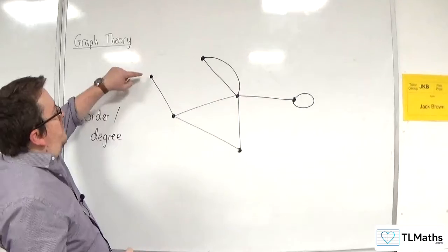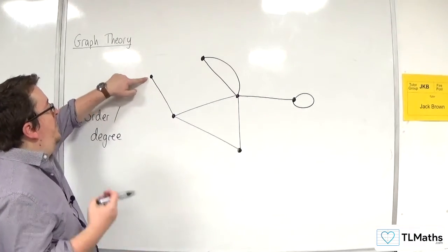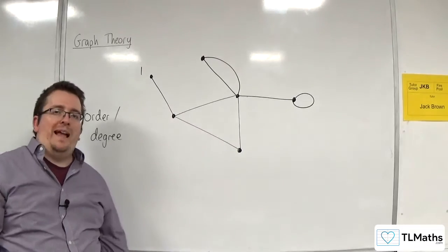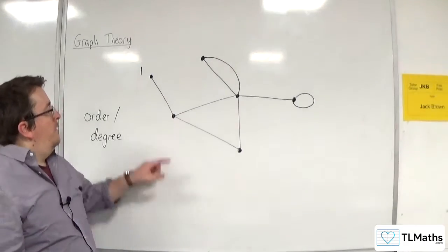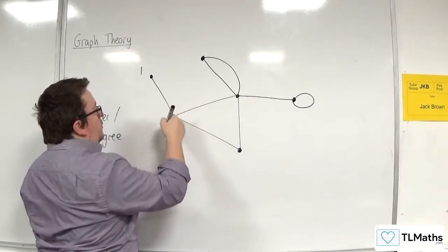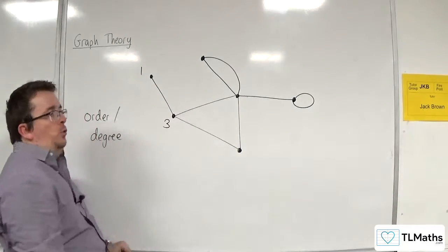So, for example, for this vertex here, this has order or degree 1 because there is one edge coming out of it. Whereas this vertex has 3 - it's got 1, 2, 3, so that has order 3.